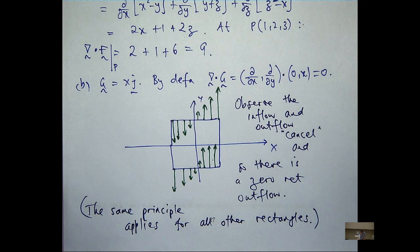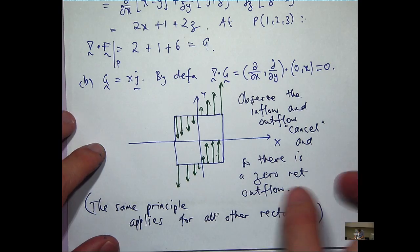Good question. Let's say there was only inflow into our rectangle. Would we expect the divergence to be positive or negative? Negative. Negative, right? And if there was a net outflow, you would expect the divergence to be positive. Because there'd be a spread, a tendency to spread away from all points inside that rectangle.